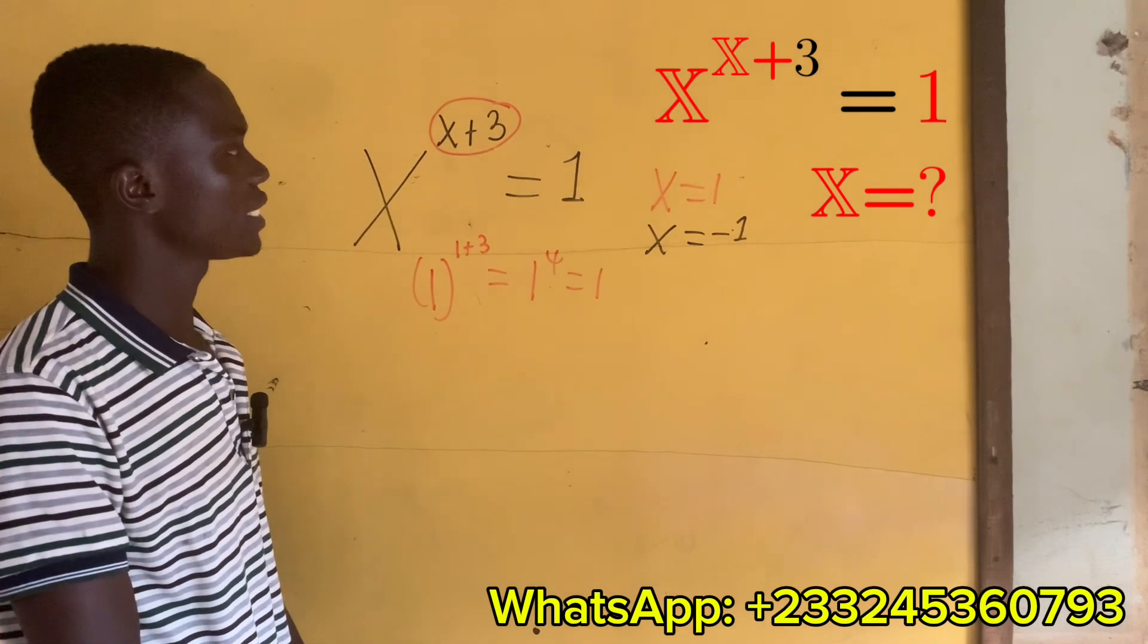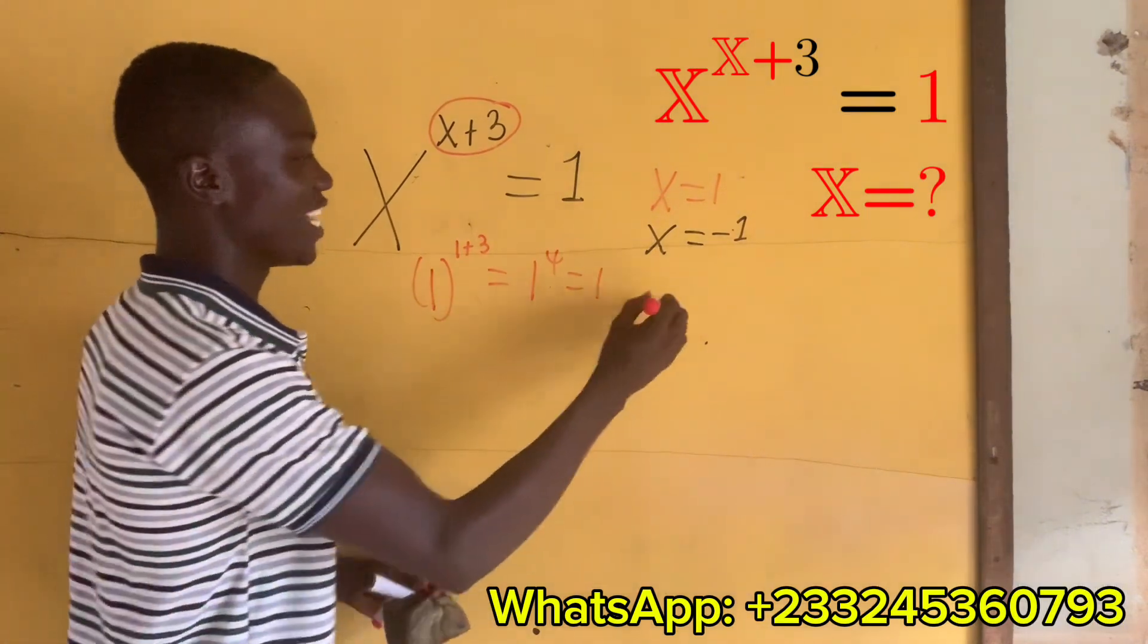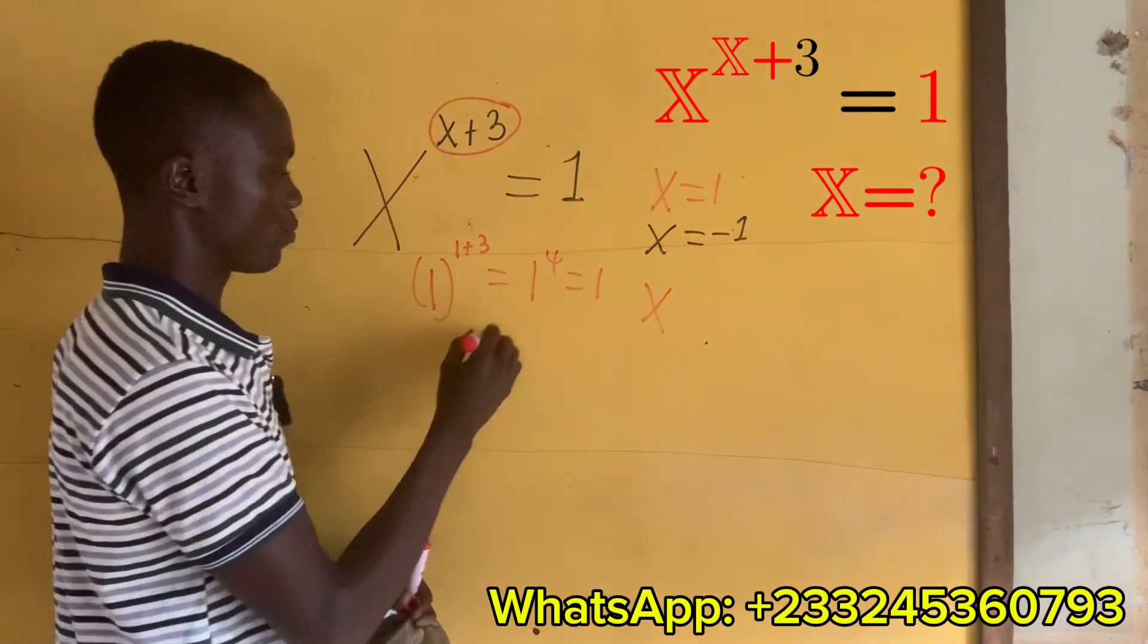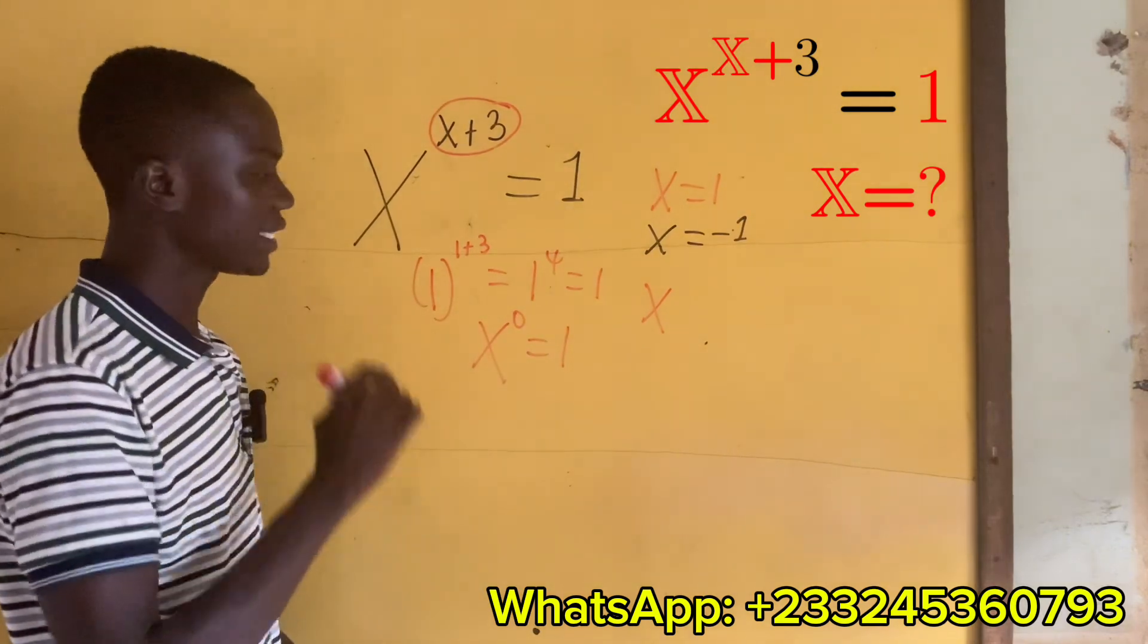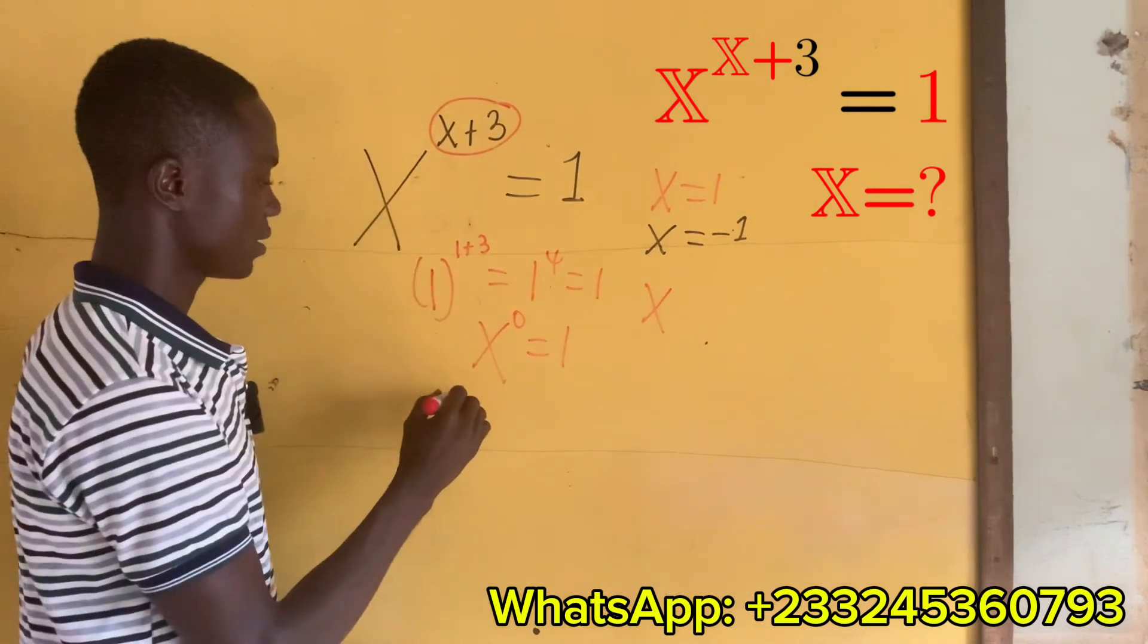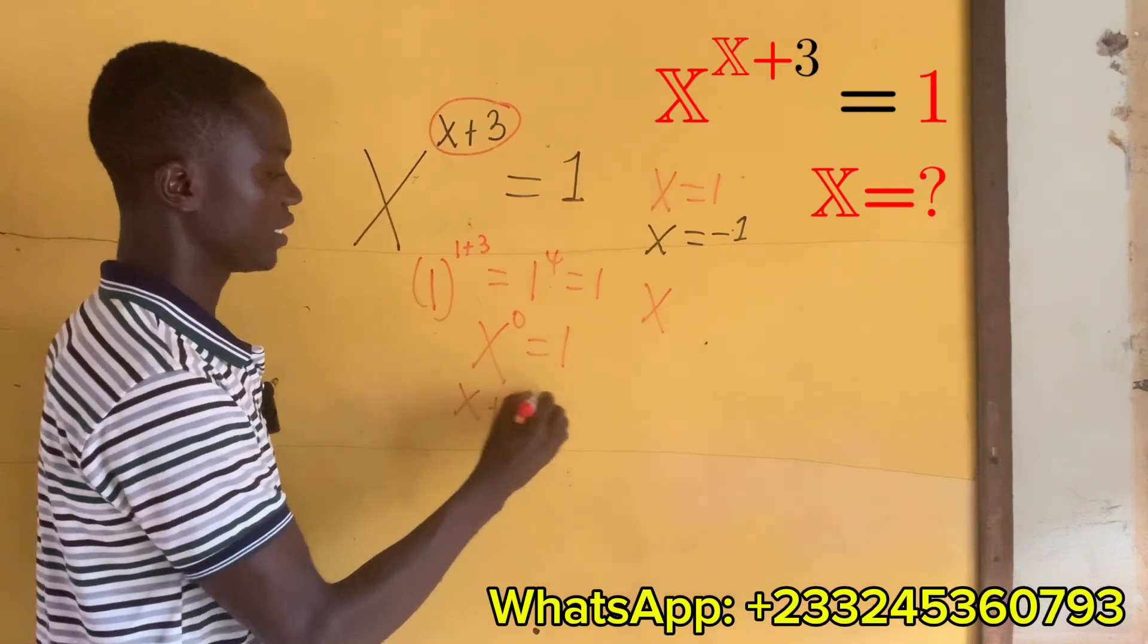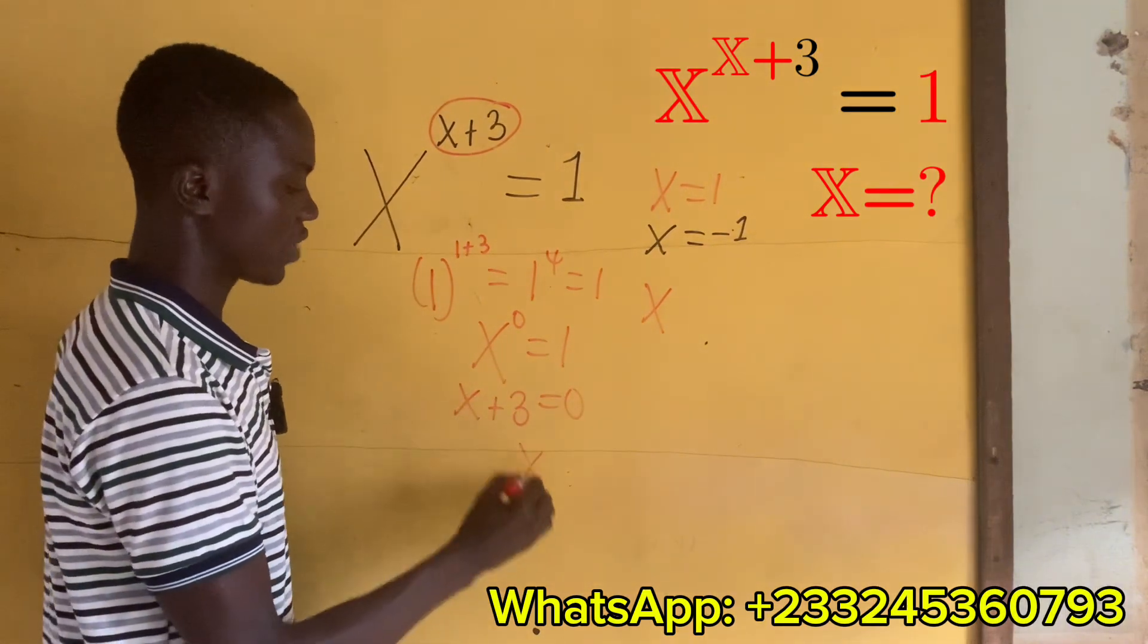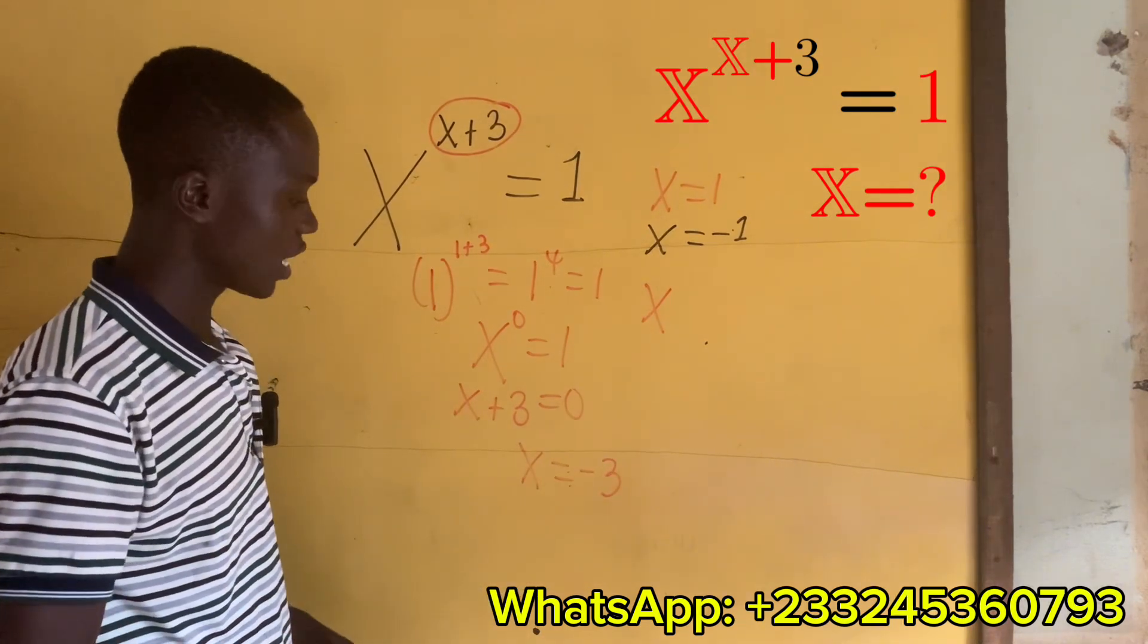Okay, let's consider x power 0. If I have x power 0, I get 1. Then that means that x plus 3 gonna be 0, which we have x equals minus 3.